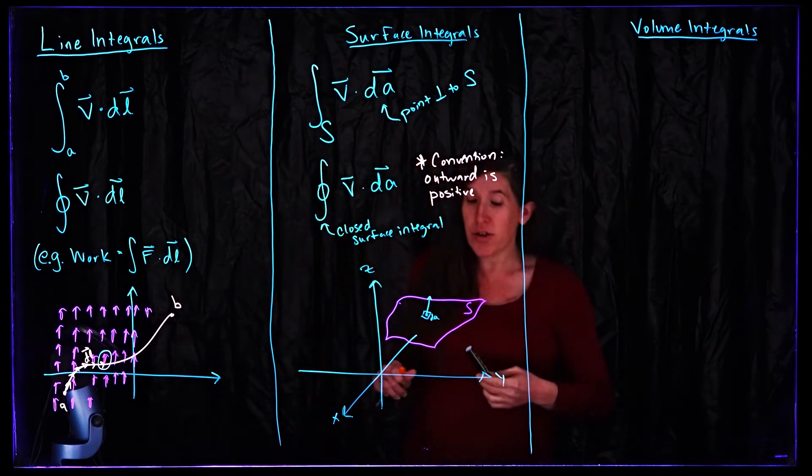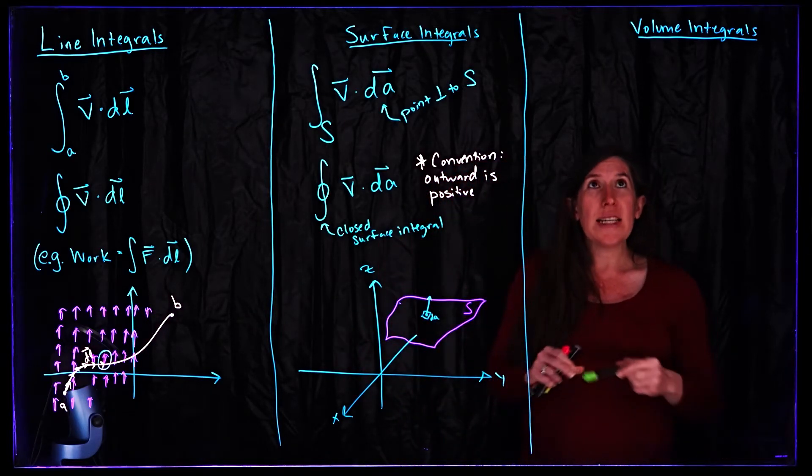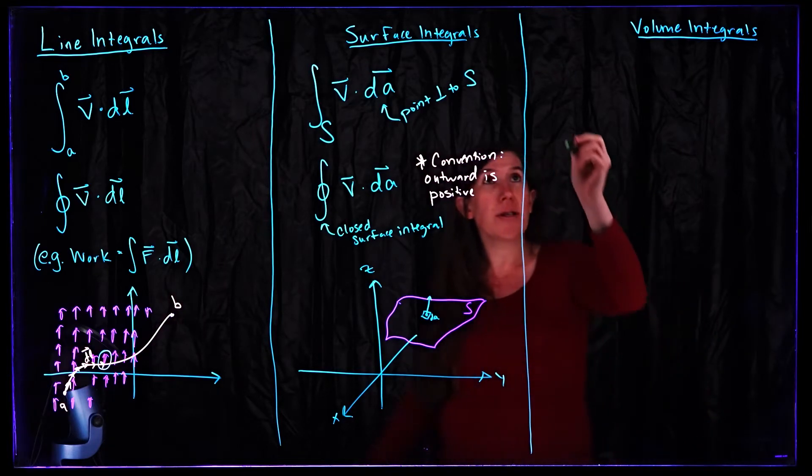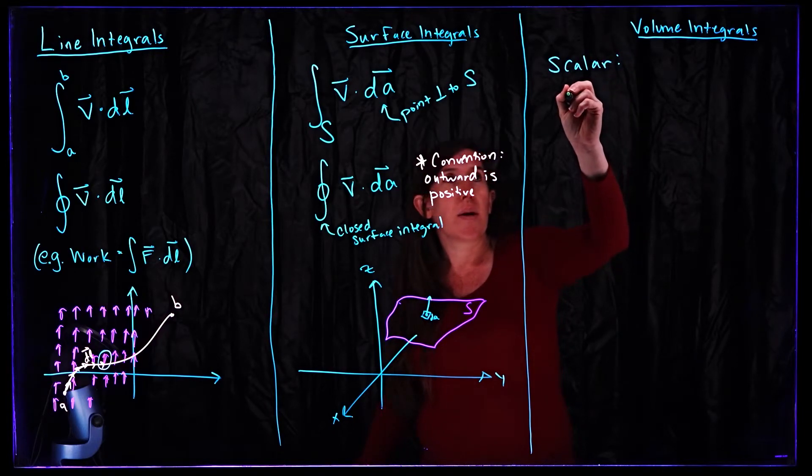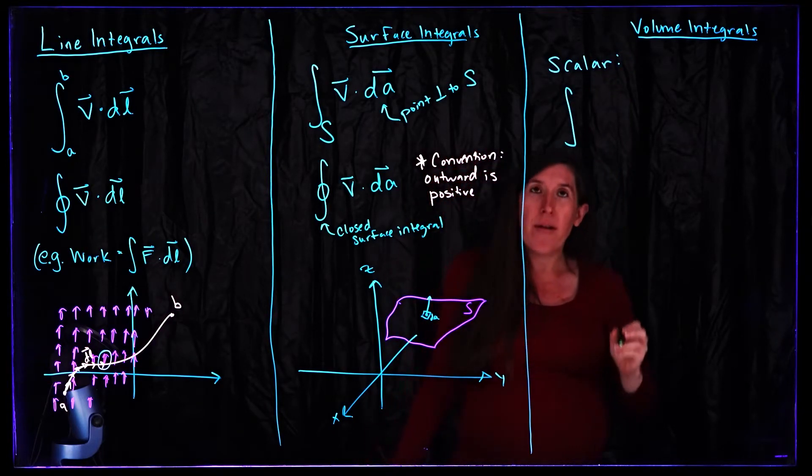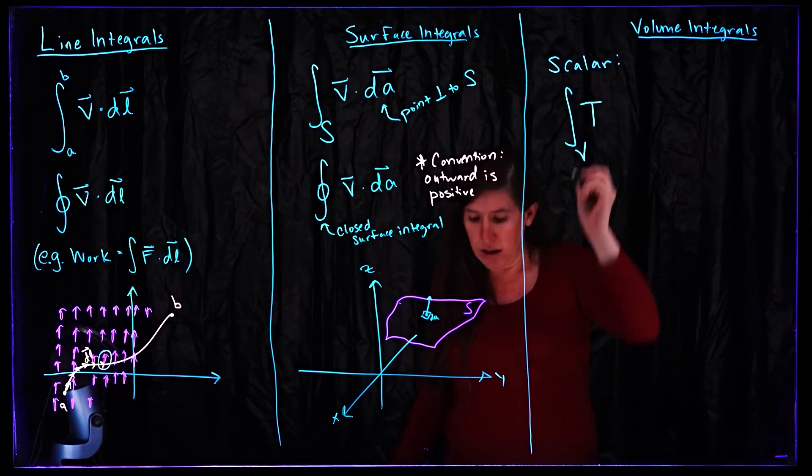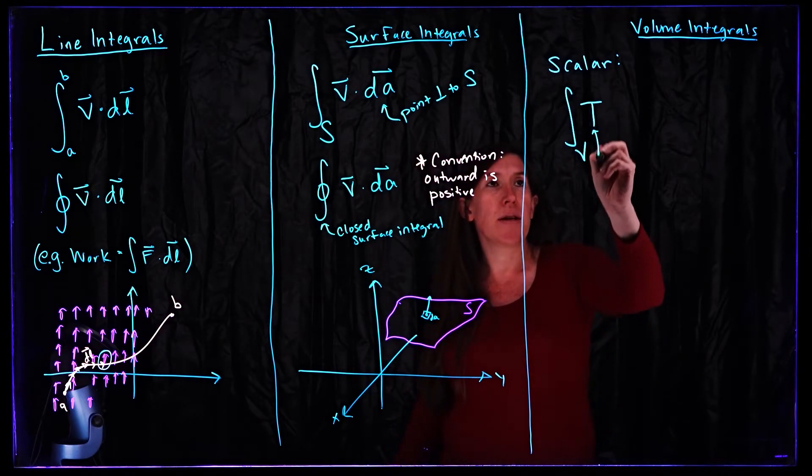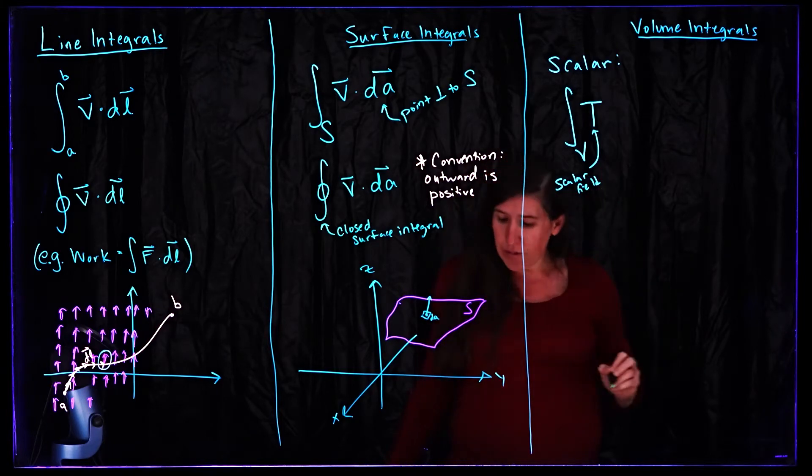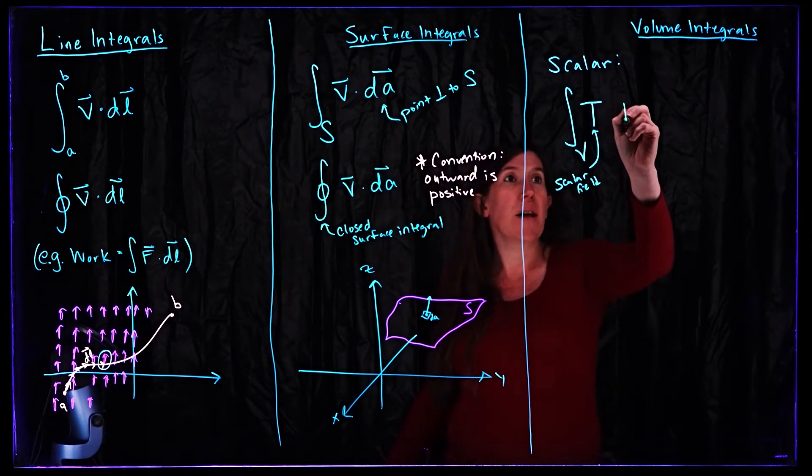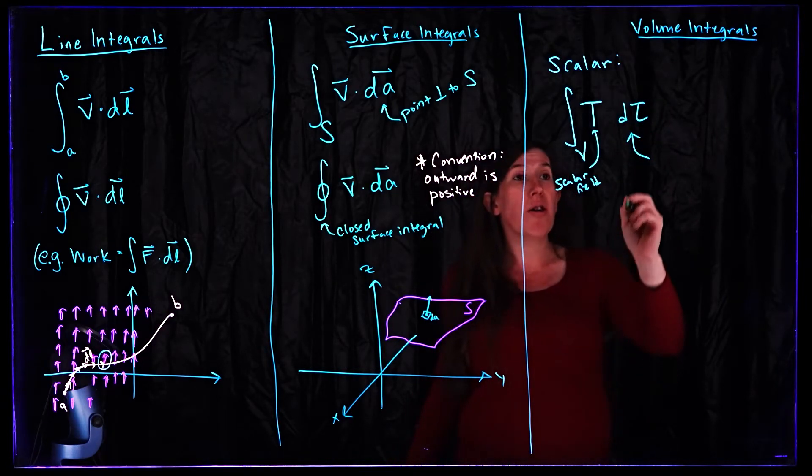All right so those are surface integrals and finally we're left with volume integrals. We can take two types of volume integrals. We could first consider taking the volume integral of a scalar function. So here we're going to integrate over some volume of, I'll use t for my scalar function or scalar field if you like.